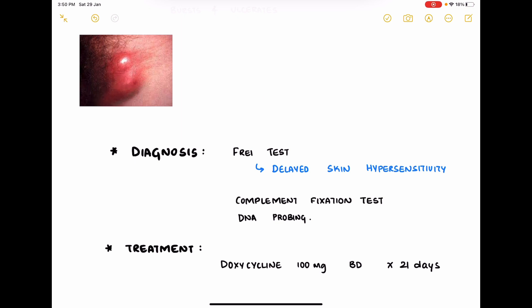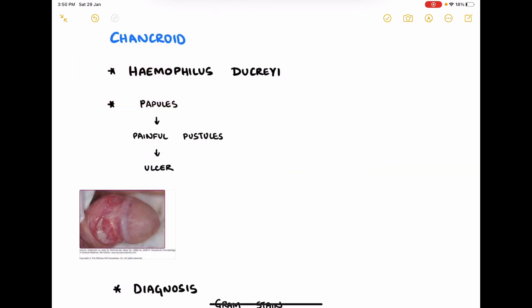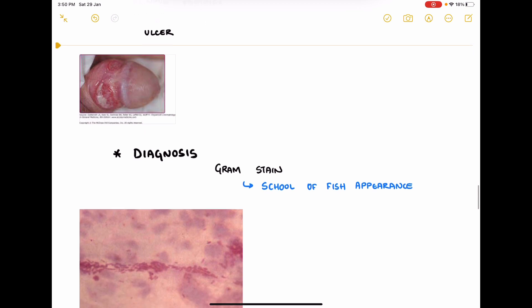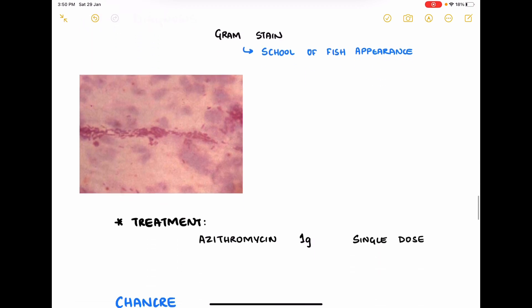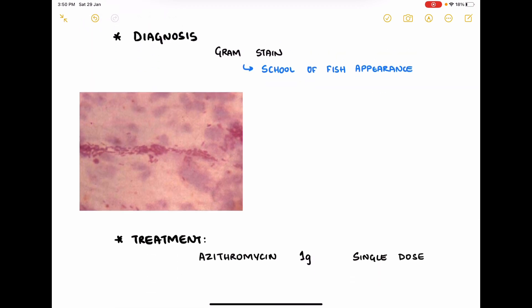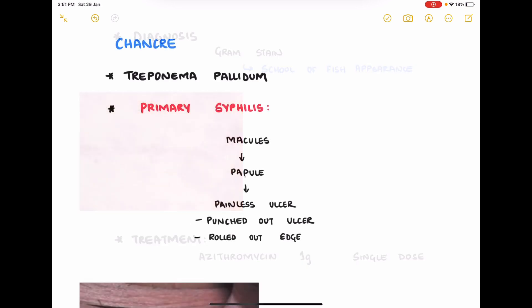The fourth condition is chancroid, caused by Haemophilus ducreyi, which starts as papules, develops into painful pustules and then painful ulcers. There's a clinical picture showing chancroid. Diagnosis is done by taking gram stain where you can see school of fish appearance as shown in this image. Treatment is azithromycin 1 gram single dose, and this is almost 98% effective.